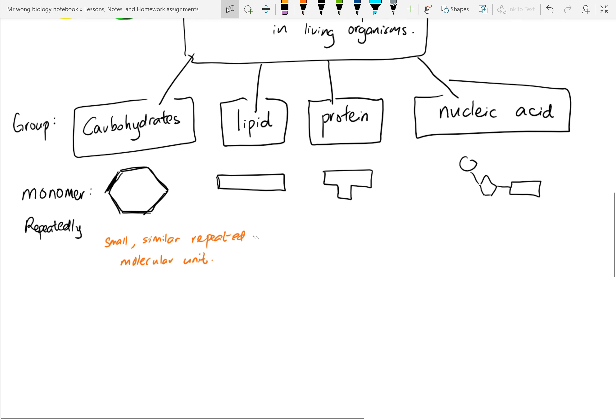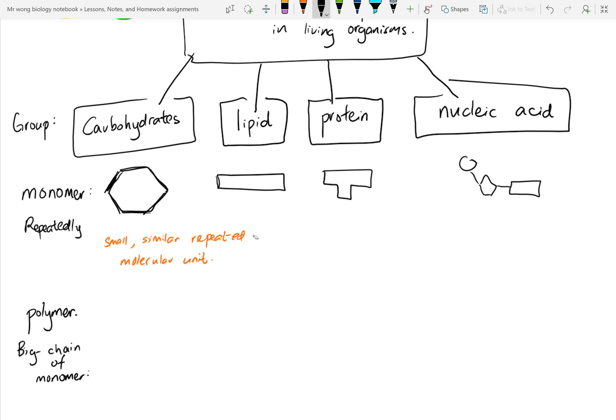So if we attach monomers with monomers, we're going to produce something which we call polymer. So polymer is really just a big chain of monomers. So if I have one monomer, and I attach it with another monomer, and attach it with another monomer, and attach it with another monomer, continuously, I will make a polymer.